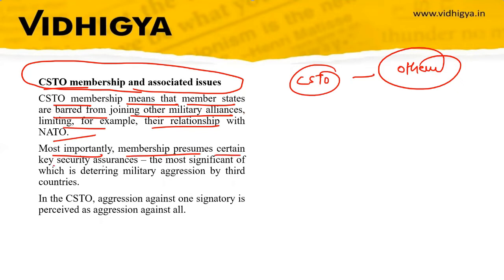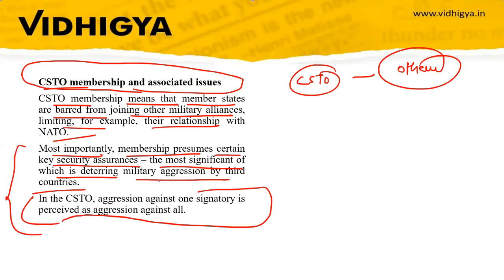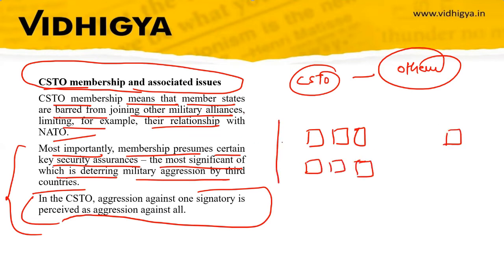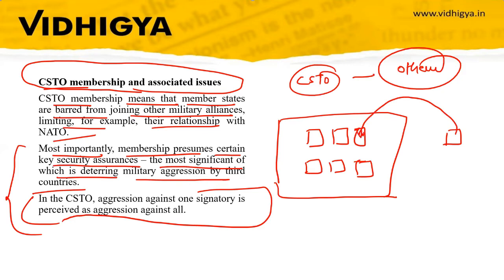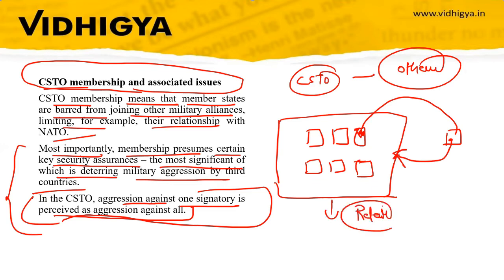Most importantly, membership in CSTO provides key security assurances, most significantly deterring military aggression by third countries. In CSTO, aggression against one signatory is perceived as aggression against all. For example, if an outside country attacks one CSTO member, it is considered an attack on all six member countries, and all can collectively retaliate. This is the principle of collective defense, which is also present in NATO.